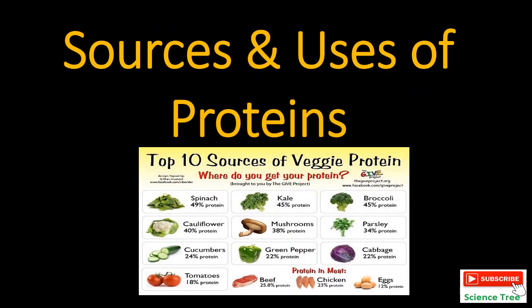Welcome to Science Tree channel. Today's topic is sources and uses of proteins. Proteins are present all around us in our vegetables, in meat, in egg and so many other things. There is a chart in which I have mentioned how much protein is present in different products. Different vegetables like spinach contain 49% protein, cauliflower 40%, cucumbers 24%, tomatoes 18%.